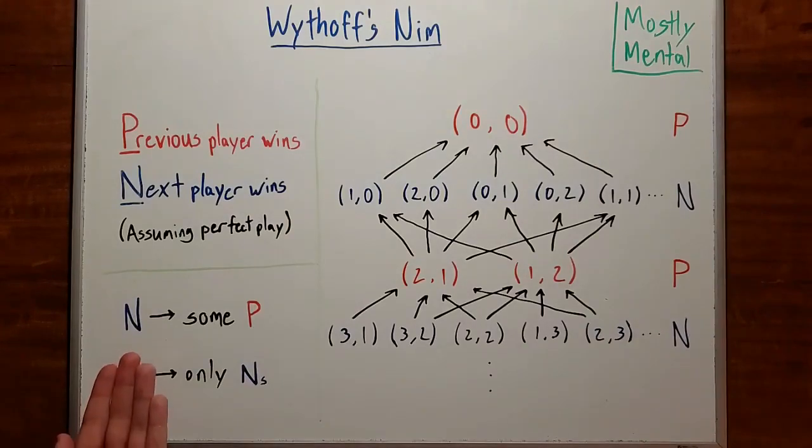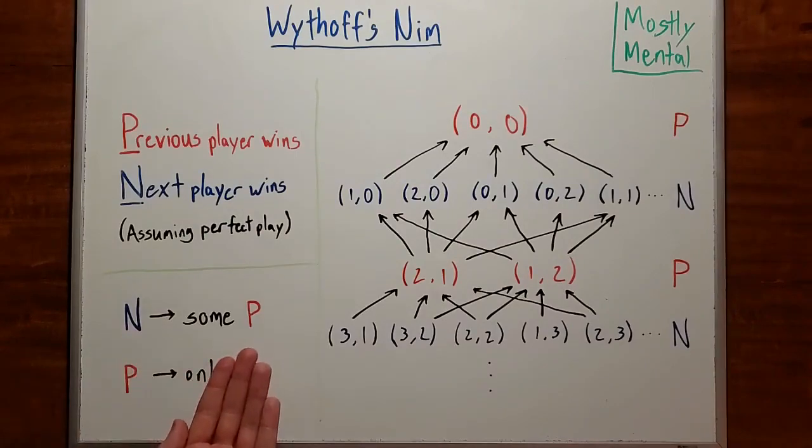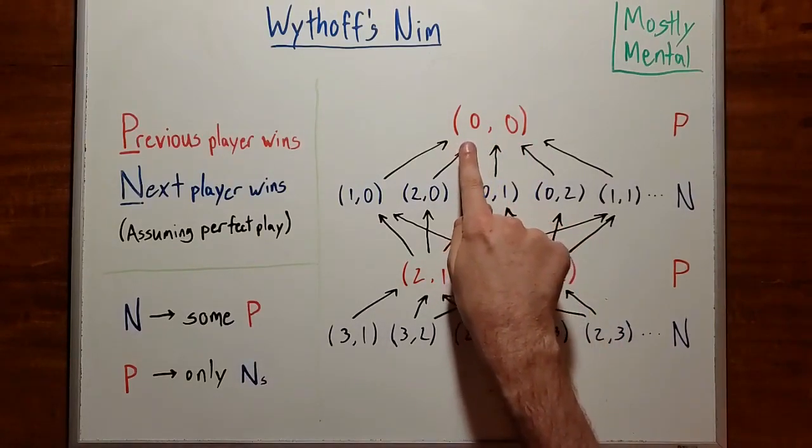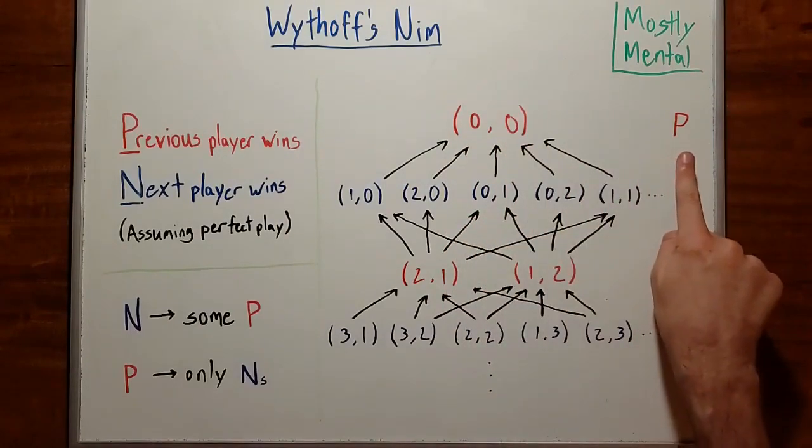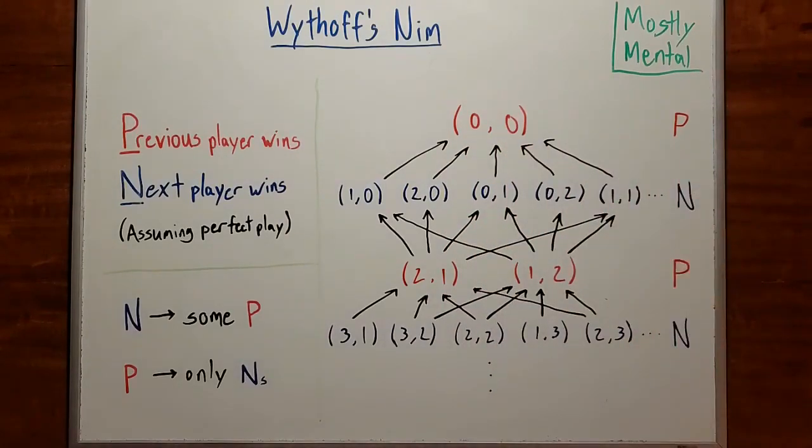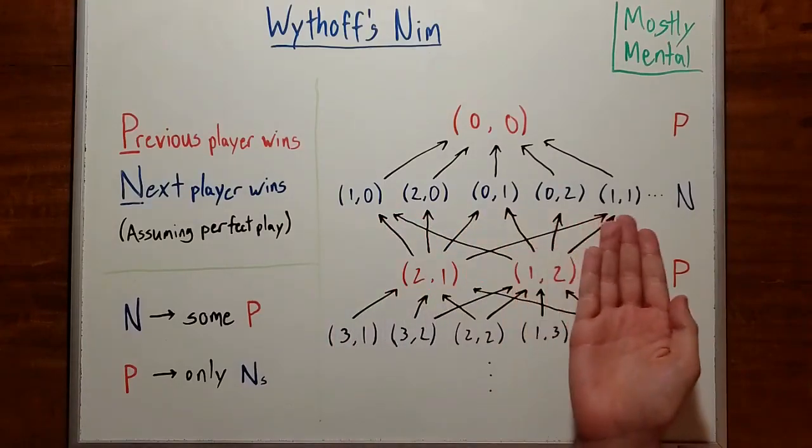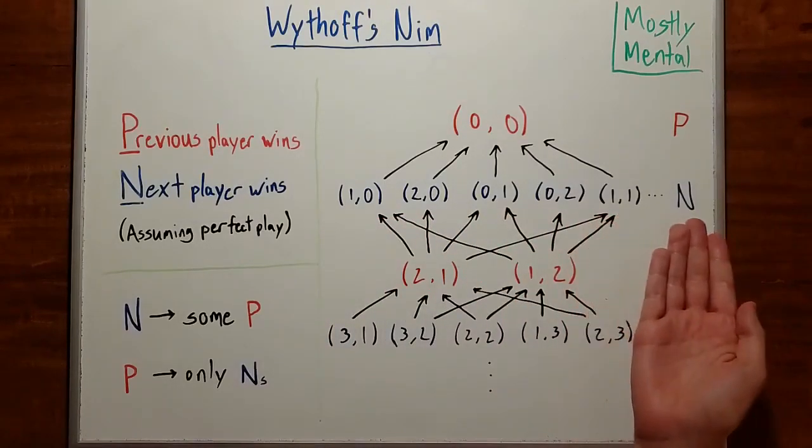In other words, an N position can always go to at least one P position, but a P position can only go to N. With this characterization, we can start classifying positions in Wythoff's Nim as P or N. The position where both piles have zero ducks, which we'll write with zero in the first pile and zero in the second, is a P position, since whoever took all the ducks just won. And any position that can get there with either one empty pile or two equal piles will be an N position.